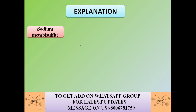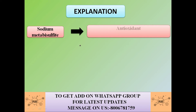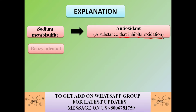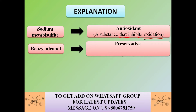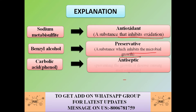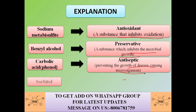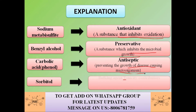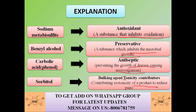Sodium metabisulfite is used as an antioxidant — a substance that inhibits oxidation. Benzyl alcohol is used as a preservative — a substance that inhibits microbial growth. Carbolic acid (phenol) is used as an antiseptic, which prevents the growth of disease-causing microorganisms. Sorbitol is used as a bulking agent or tonicity contributor, helping to reduce pain. The correct answer is sorbitol.